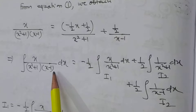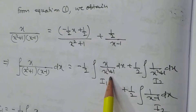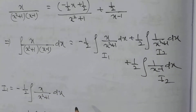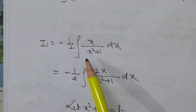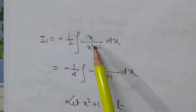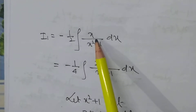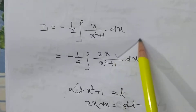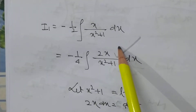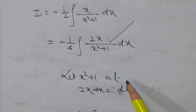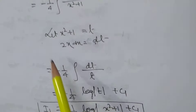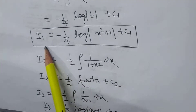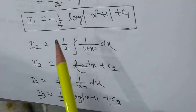The integration of x/[(x² + 1)(x - 1)] dx becomes: (-½) × x/(x² + 1) dx + ½ × 1/(x² + 1) dx + ½ × 1/(x - 1) dx. For i₁ = (-½) × ∫x/(x² + 1) dx, we multiply numerator and denominator by 2 so that the numerator becomes the differential coefficient of the denominator. Let x² + 1 = t, 2x dx = dt. So i₁ = (-1/4) ∫dt/t = -1/4 log|t| + c₁ = -1/4 log(x² + 1) + c₁.